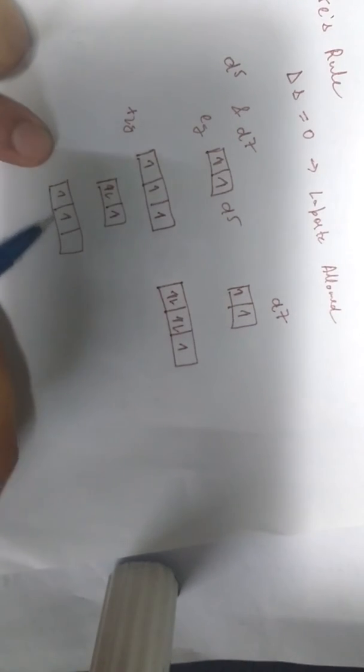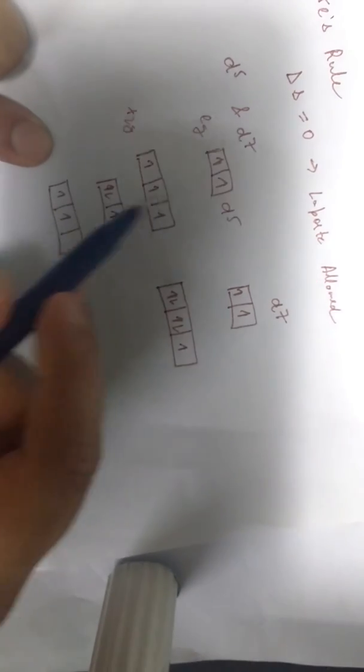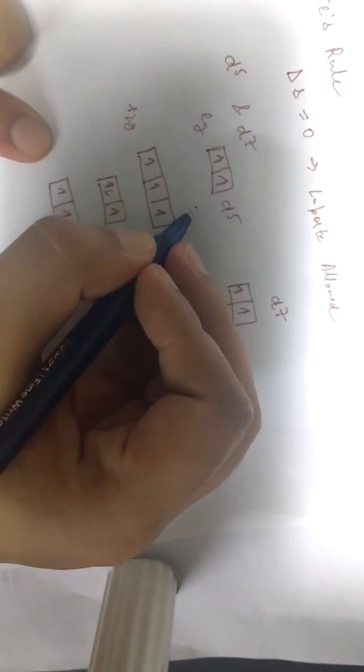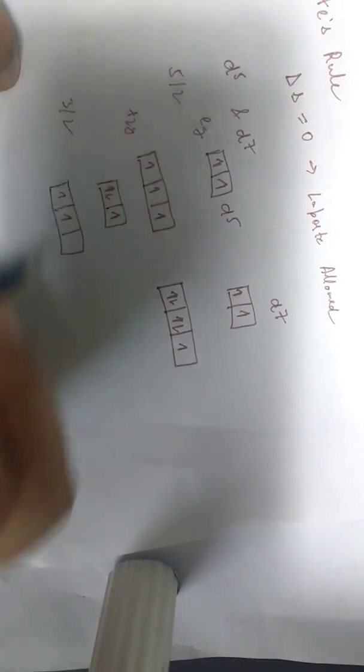But if we calculate over here, it's half plus half, 1 plus 1, 2 and minus 1, so 3 by 2. So there's a spin change, so here the spin was 5 by 2 and here it was 3 by 2.